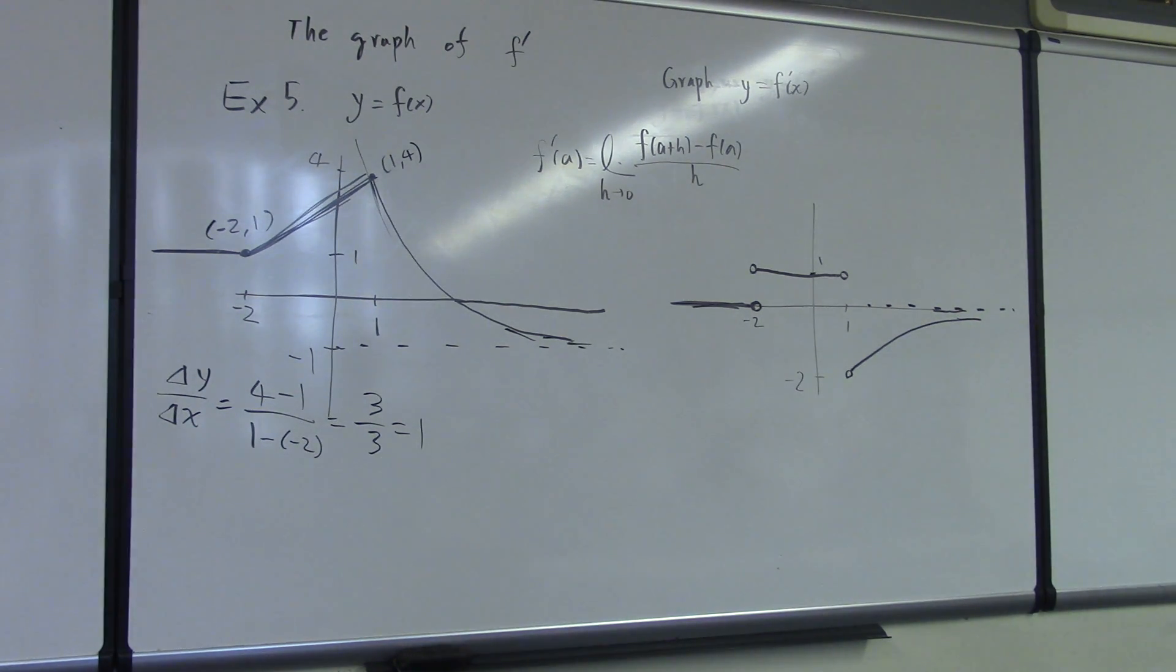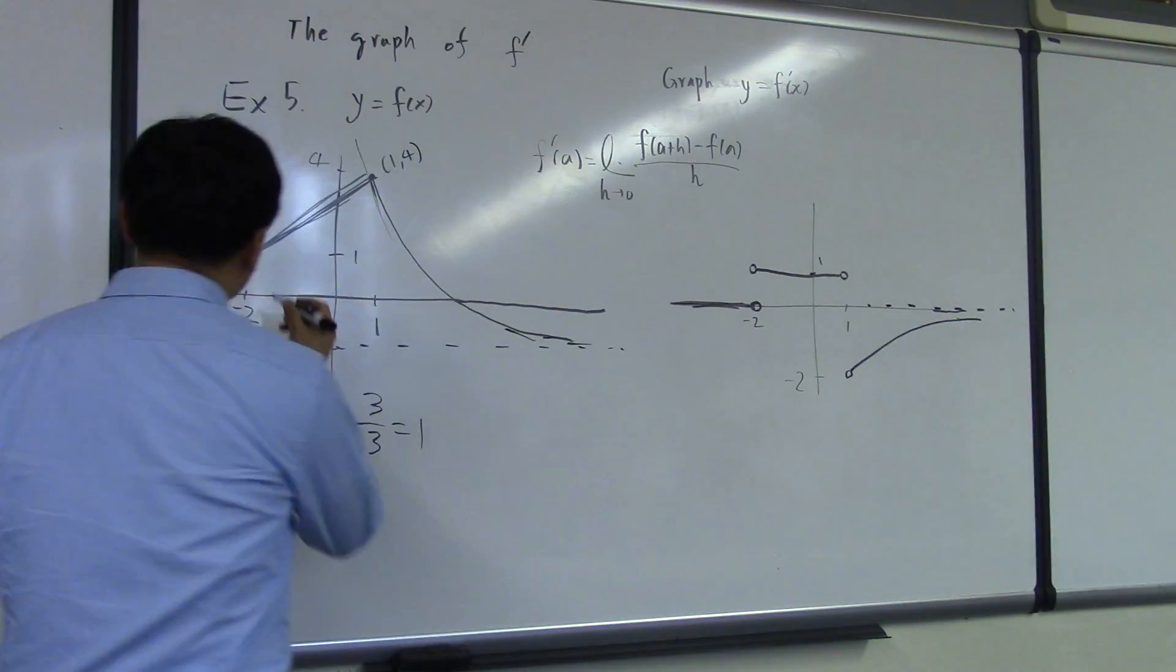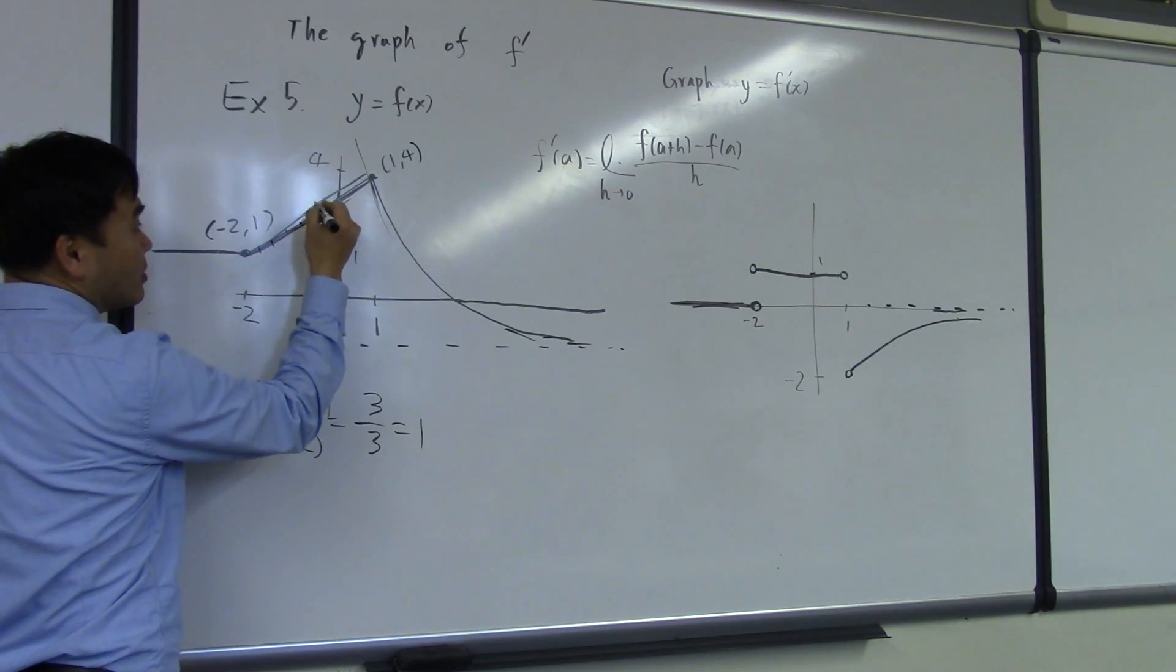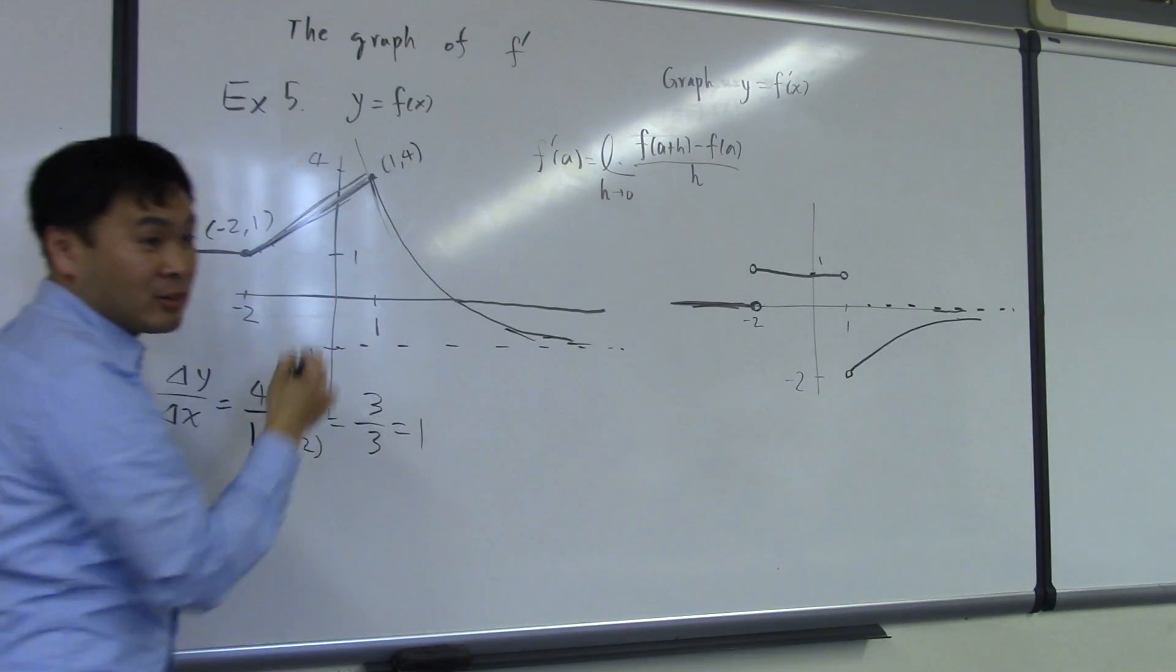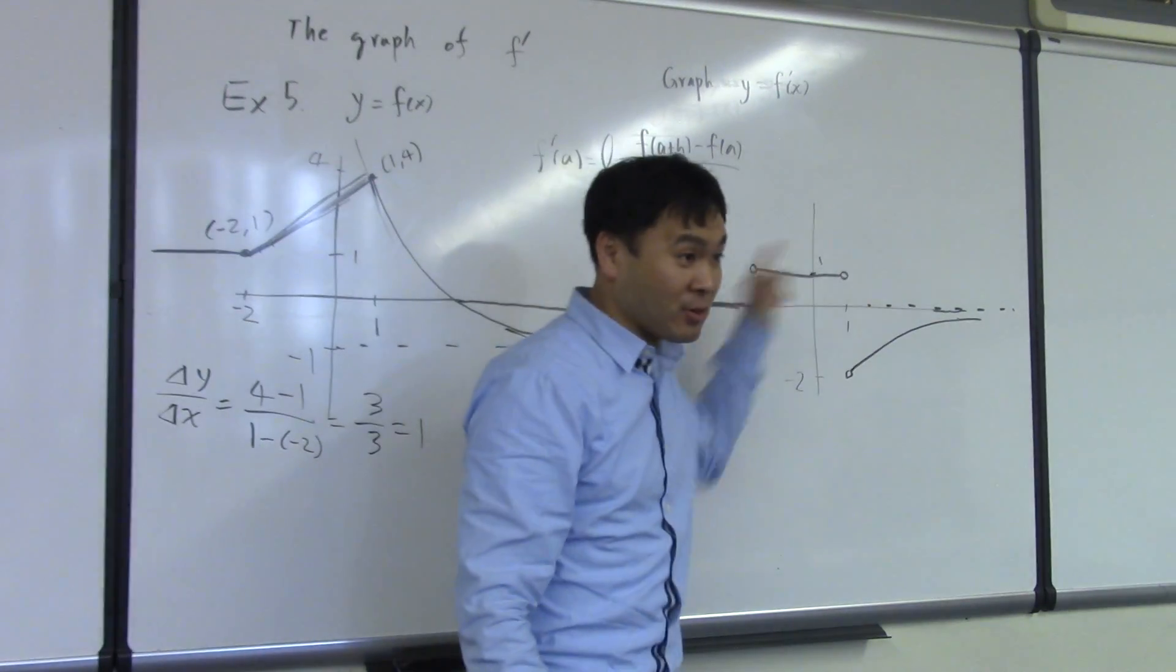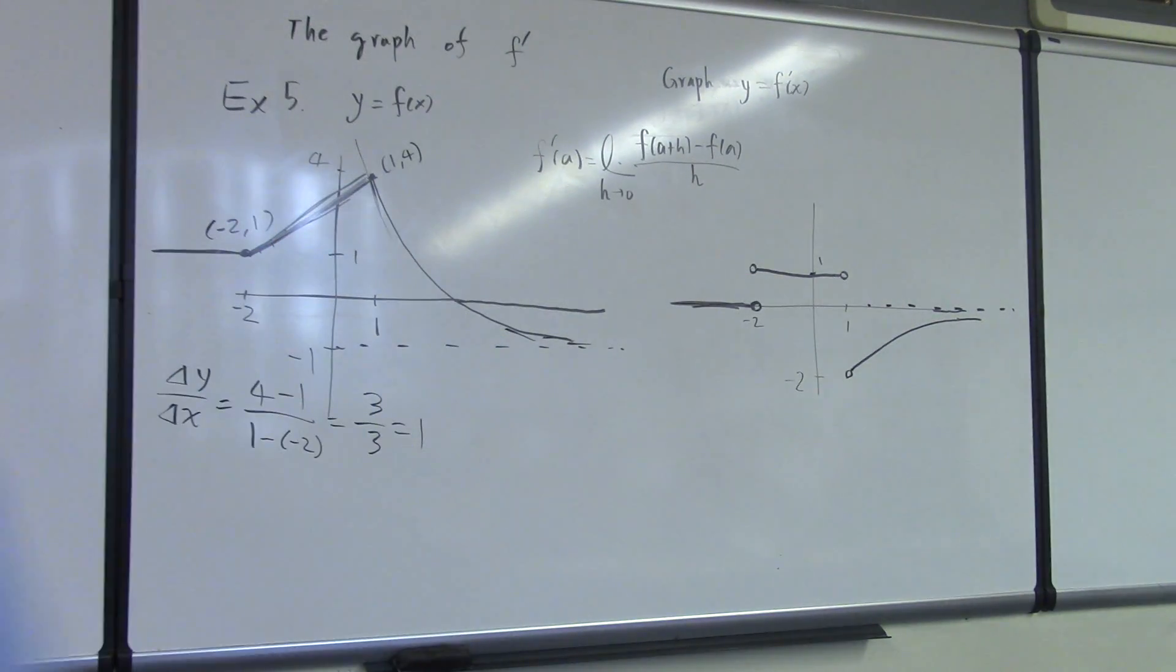Yes? Can you explain the middle part? Why that was straight? Right. So, here, is the slope changing? No. The slope is not changing. It's always this one. That's why it's a constant value function. It's always one. Thank you.